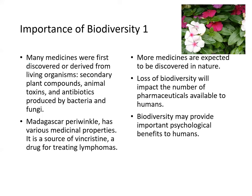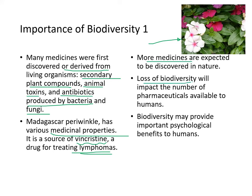Many medicines were first discovered or derived from living organisms, often as secondary compounds. Animal toxins and antibiotics can also be produced by bacteria and fungi. Here's the Madagascar periwinkle, which has many medicinal properties — it's the source of vincristine, a drug used to treat lymphomas. More medicines are expected to be discovered, but the loss of biodiversity will impact the number of pharmaceuticals available.